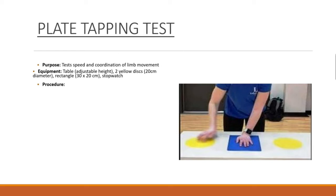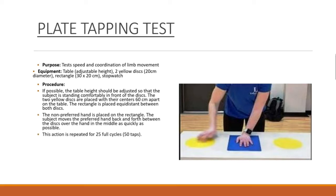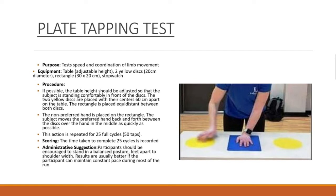Procedure: The table height should be adjusted so that the subject is standing comfortably in front of the discs. The two yellow discs are placed with their centers 60 centimeters apart on the table. The rectangle is placed equidistant between both discs. The non-preferred hand is placed on the rectangle. The subject moves the preferred hand back and forth between the discs over the hand in the middle as quickly as possible. This action is repeated for 25 full cycles, 50 taps. Scoring: The time taken to complete 25 cycles is recorded. Administrative suggestion: Participants should be encouraged to stand in a balanced posture, feet apart to shoulder width.